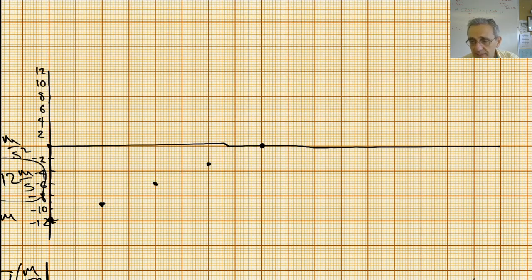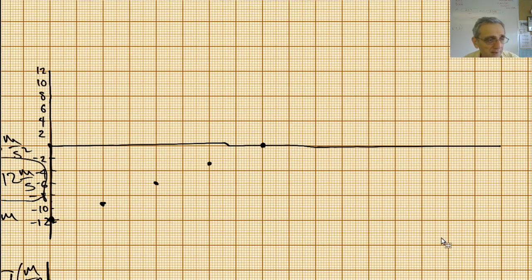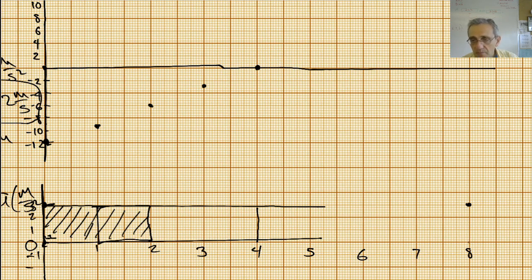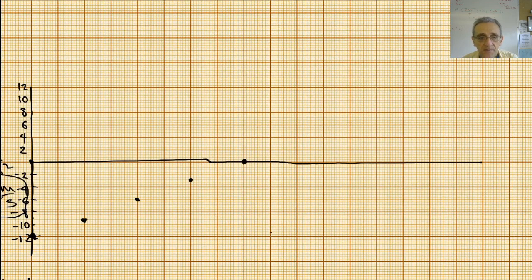If I go to 8 seconds here and pull this up — starting from the 4-second point, that's 4 on the horizontal, because 8 minus 4 is 4. 4 times 3 is 12. That means my last point should be at 8 seconds up here at positive 12.